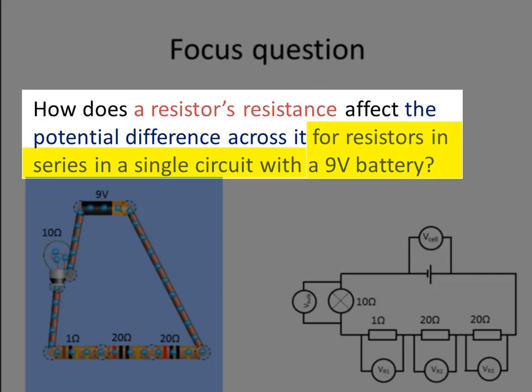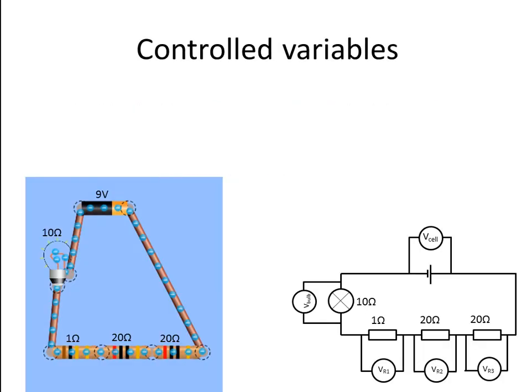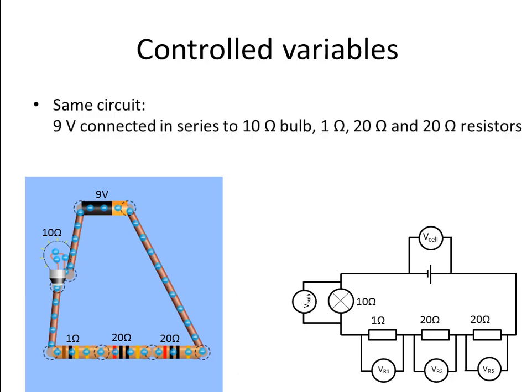The description of the context is the single circuit we are using: four resistors in series in a single circuit with a 9 volt battery. To make this fair, all the resistors are in the same single circuit, so the necessary variables are automatically controlled — 9 volts connected in series to the 10 ohm, the 1 ohm, the 20 ohm, and the 20 ohm.